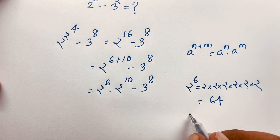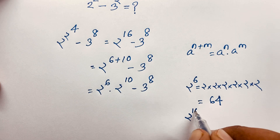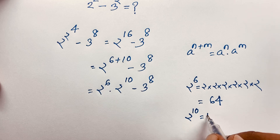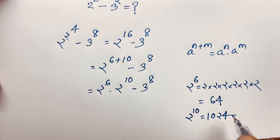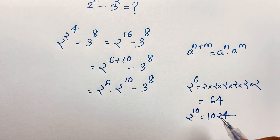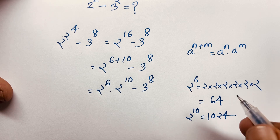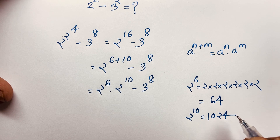So 2 to the power 10 will be 1024. We know that 2 to the power 9 is 512, and 512 times 2 will be 1024.